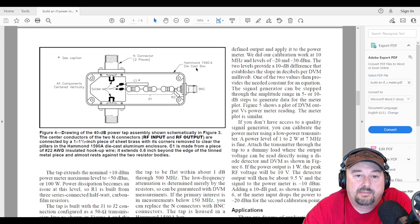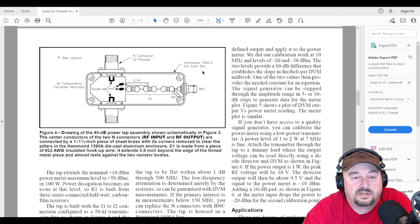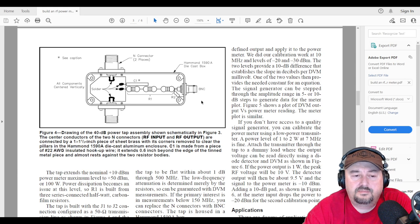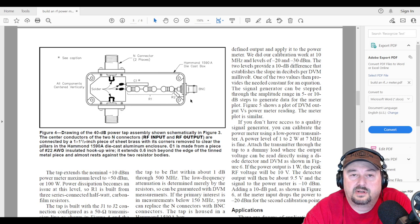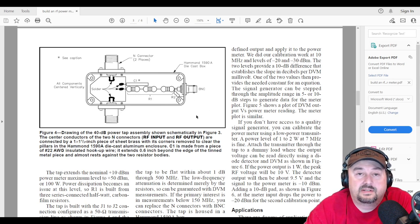This whole thing is made in a Hammond 1590A die-cast box. Now I'll have some links to some parts in the description if you wanted to buy some of this stuff. But these are all something called stomp boxes. I don't know why, but I was able to get one off of Amazon for about $6, give or take.